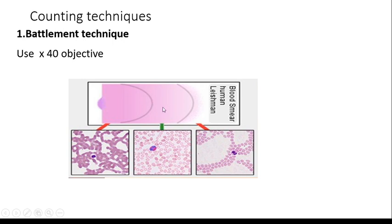This is the body. This is the feathered edge. The feathered edge is going to be a little bit too thin. Between those two areas, we find white blood cell differential and red blood cell morphology.